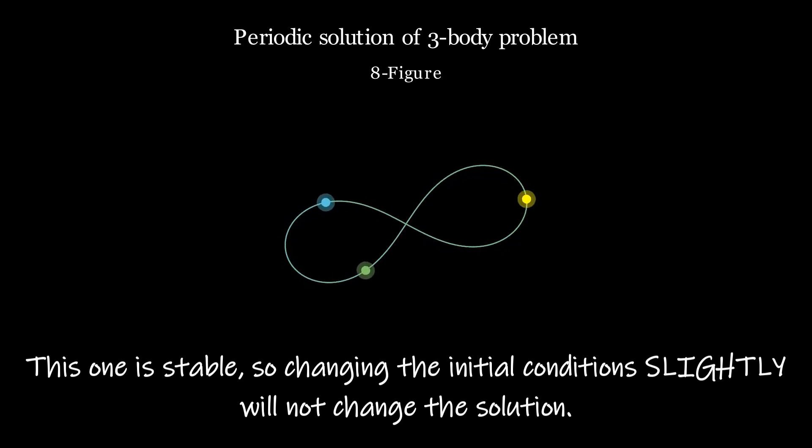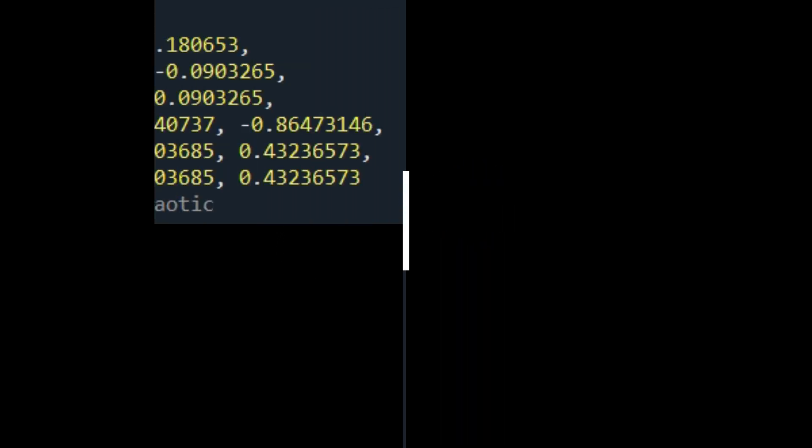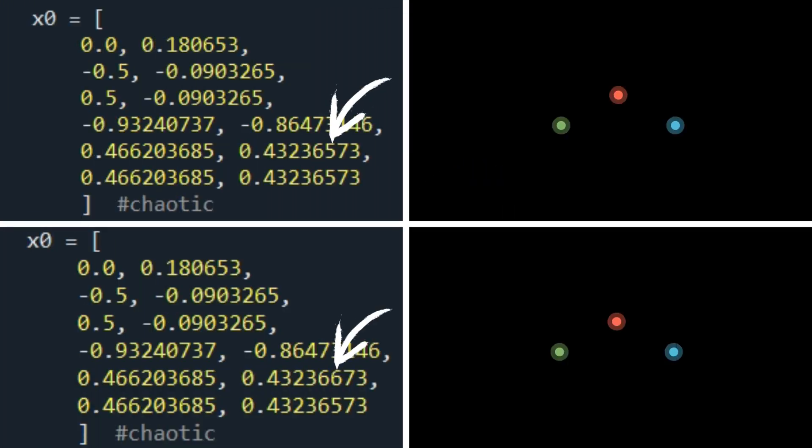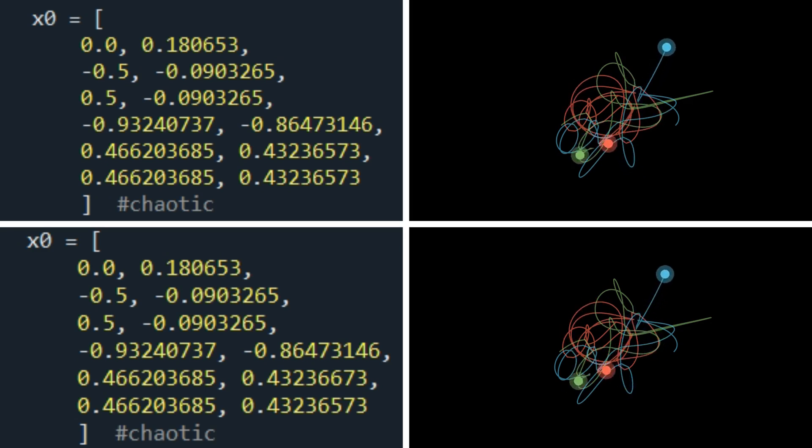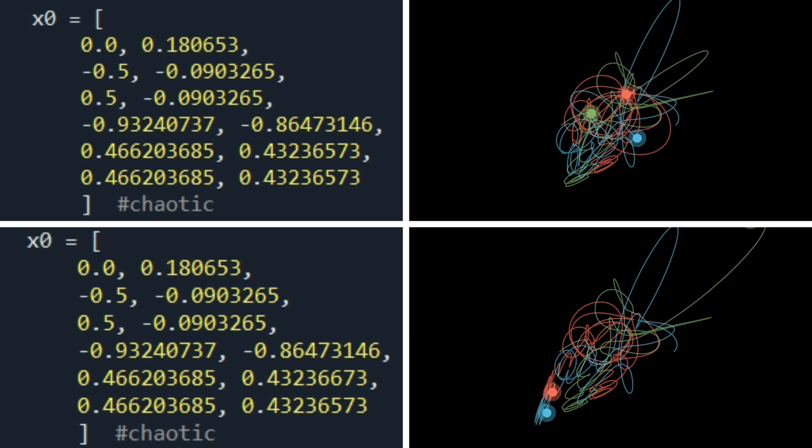To really appreciate what sensitivity to initial conditions means, let's take a look at this new example. Now these two values differ in the sixth decimal place. Let's take a look at how the solution will change. They start off the same, but as time passes, their motion changes in noticeably different ways. And this is the essence of chaos. Tiny changes in initial conditions get amplified over time, leading to completely different trajectories.